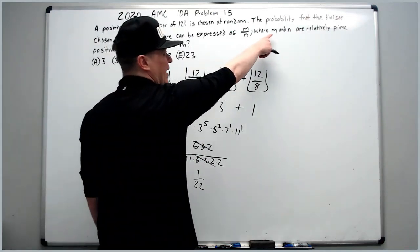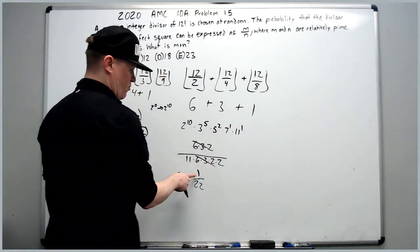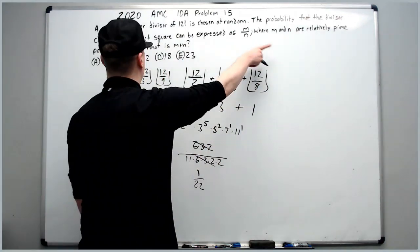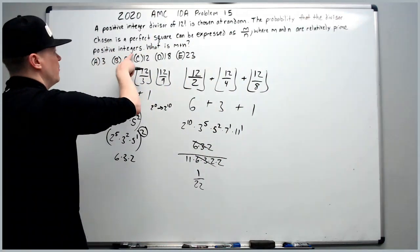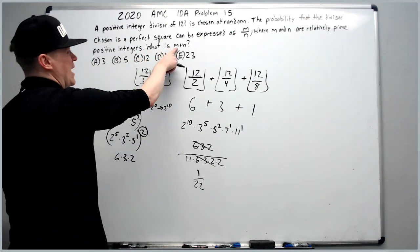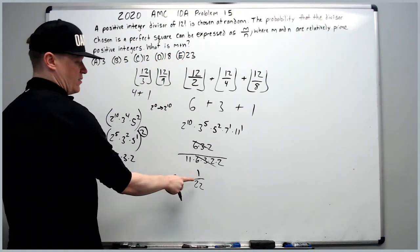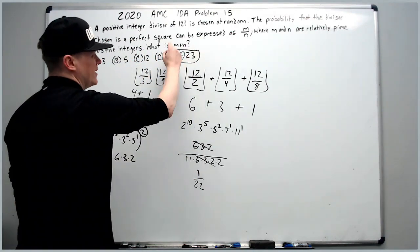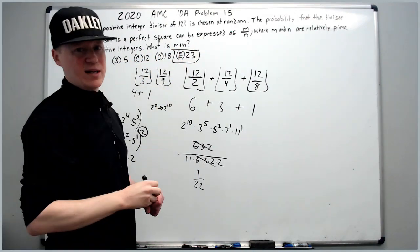Cancellation is nice, so we get 1 over 22 as the probability. It asks whether m and n are relatively prime — they absolutely are. So m plus n equals 1 plus 22, which is 23.